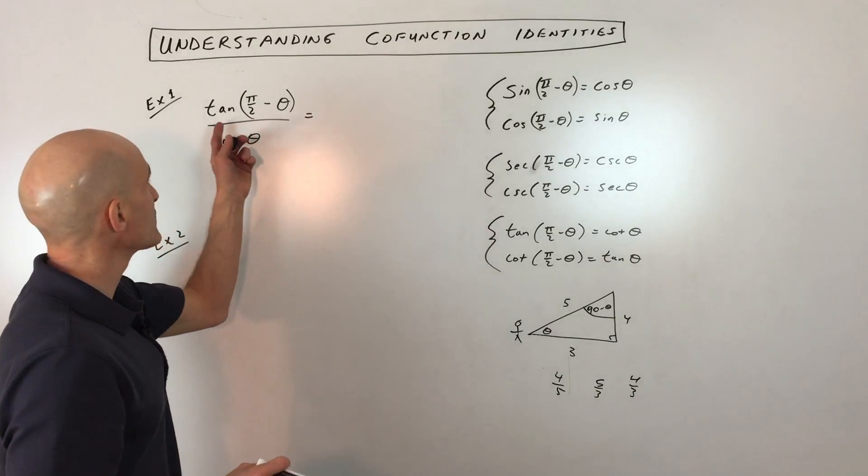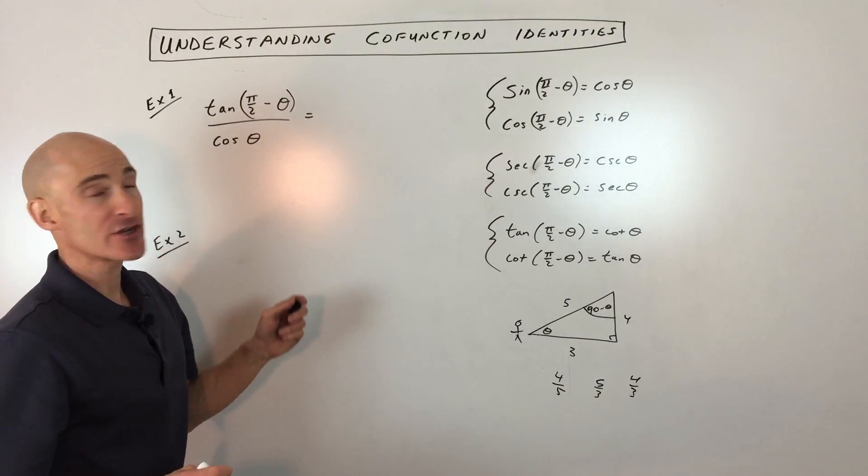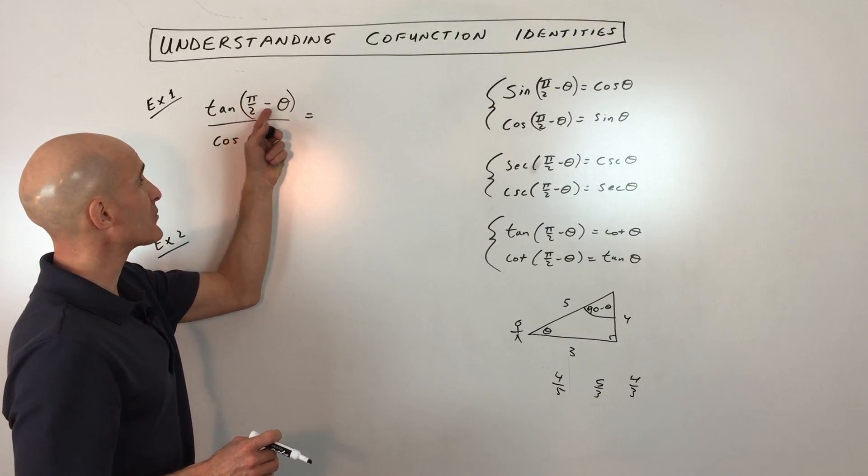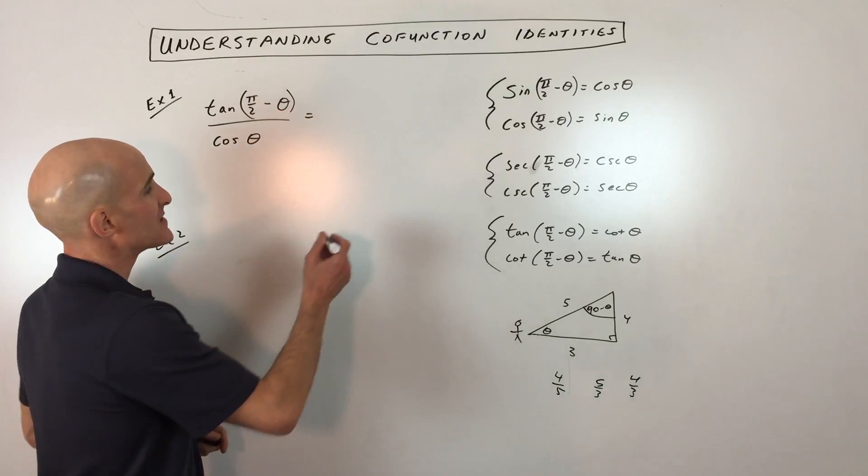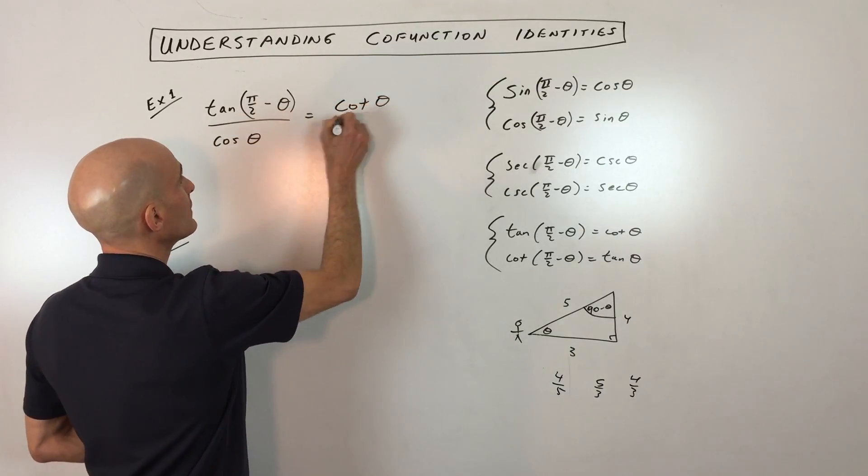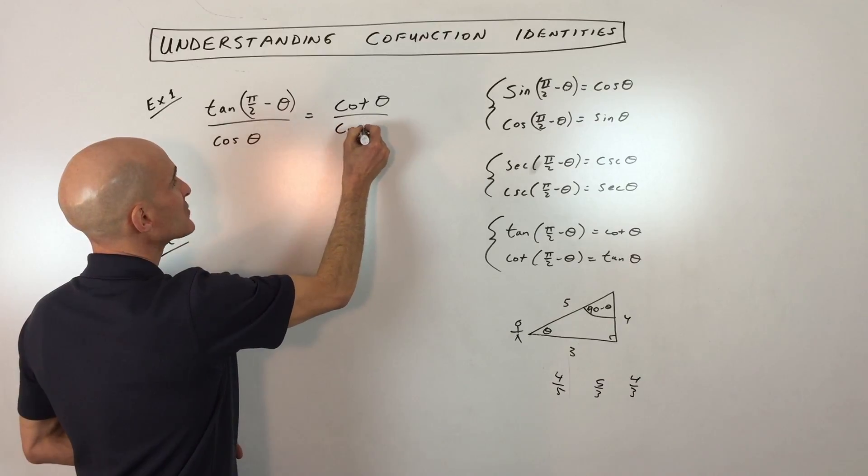So let's look at some examples, I'll show you how it works. So say for example, you wanted to simplify this expression. Well, tangent of pi over 2 minus theta, we know that's equal to cotangent of theta. And cosine of theta, we're just going to leave that as cosine of theta.